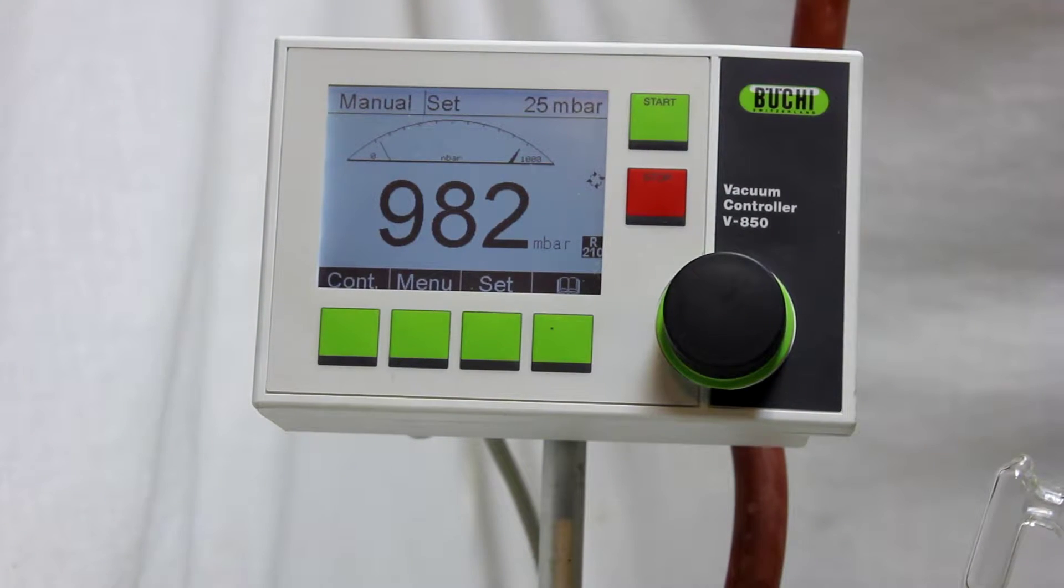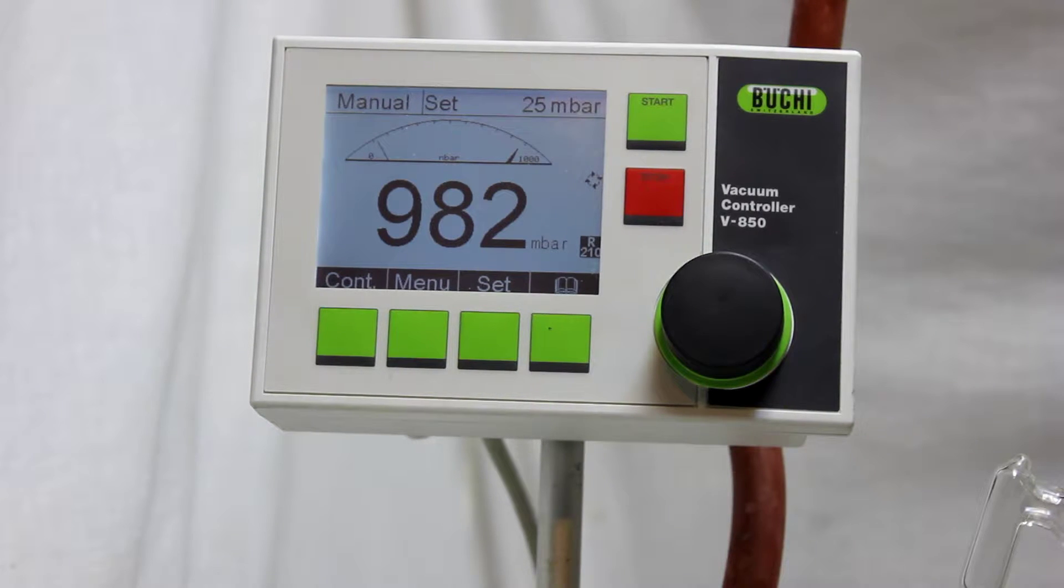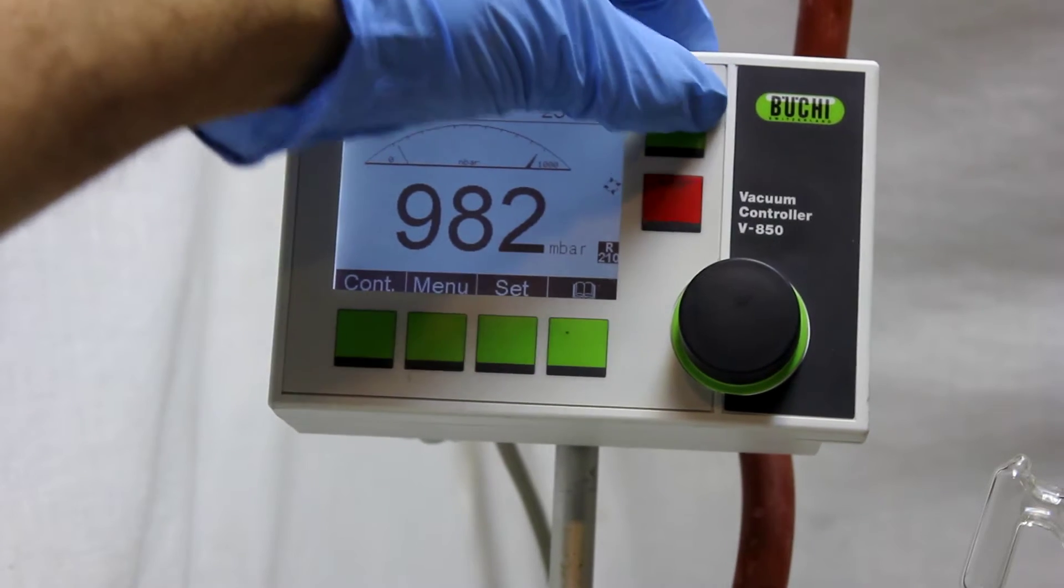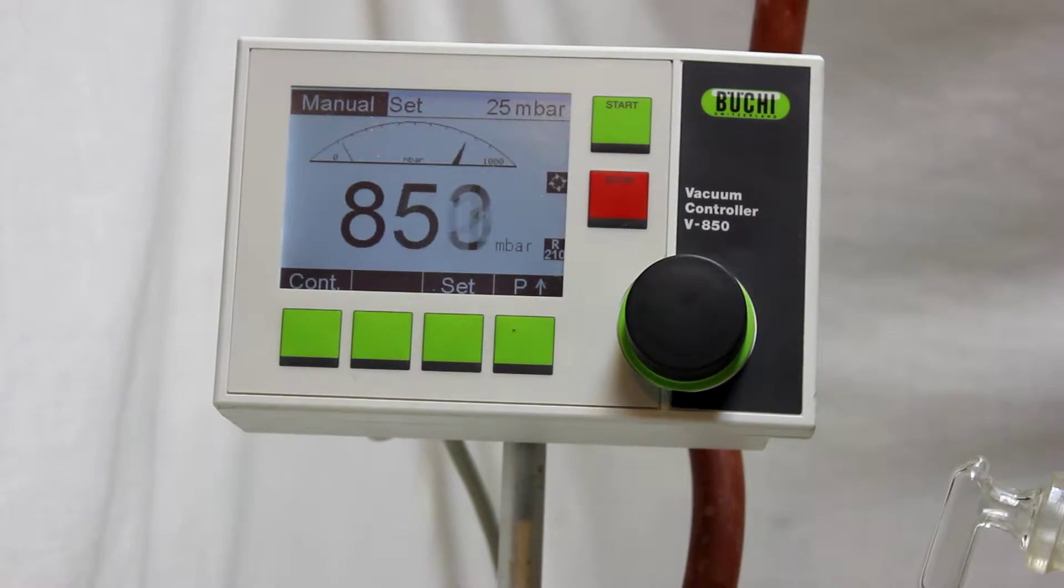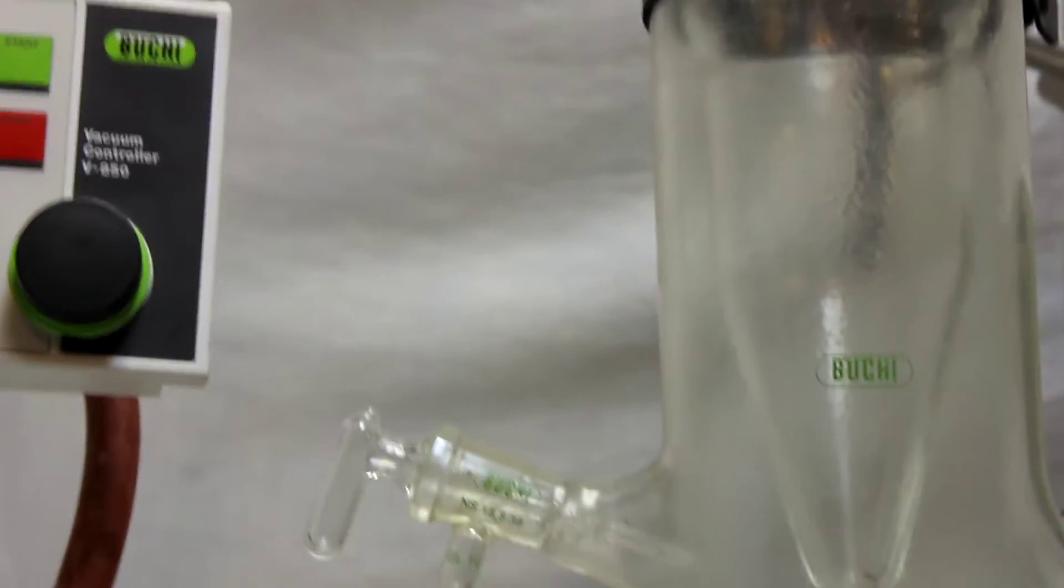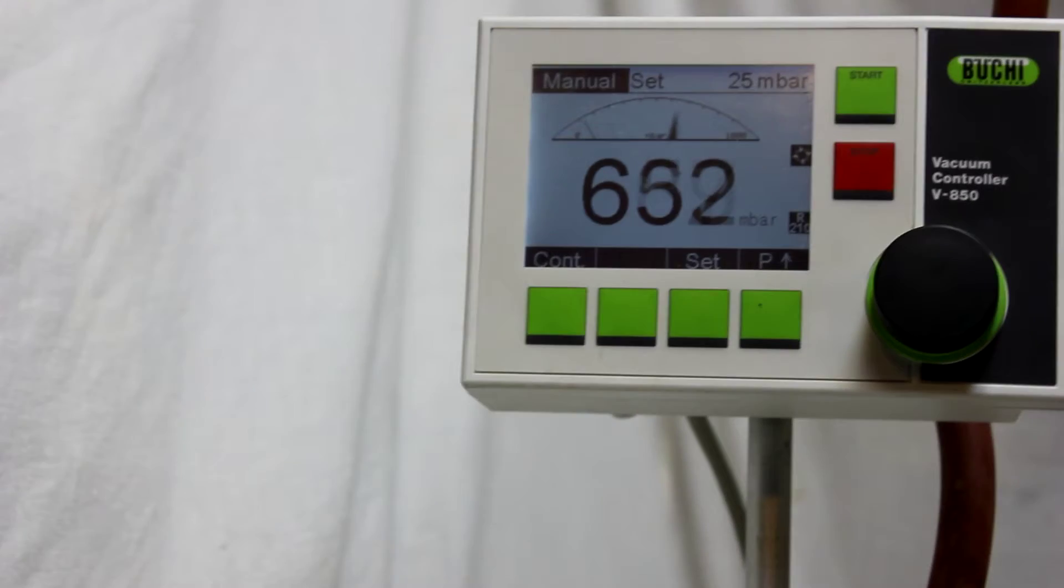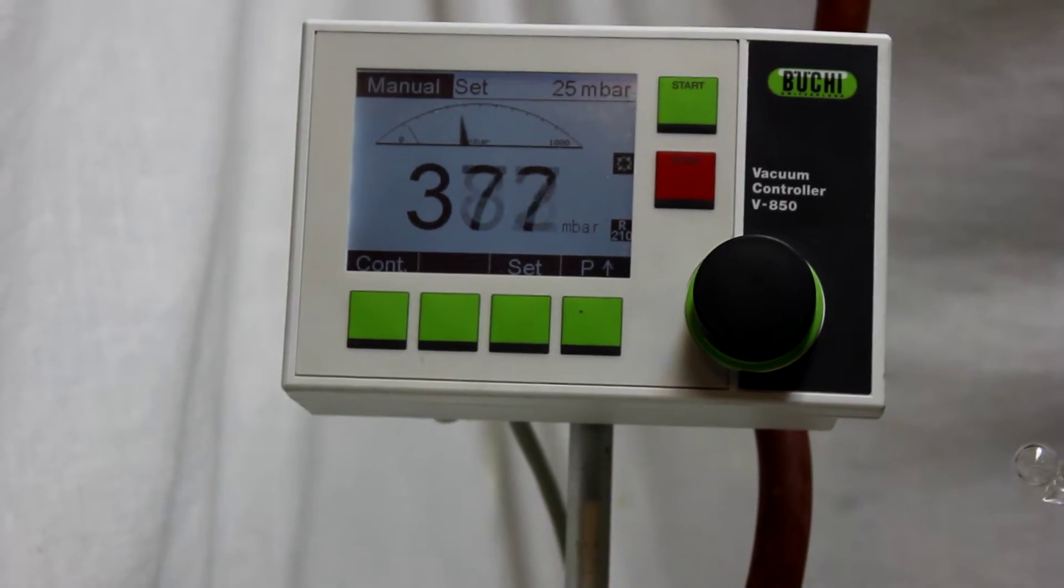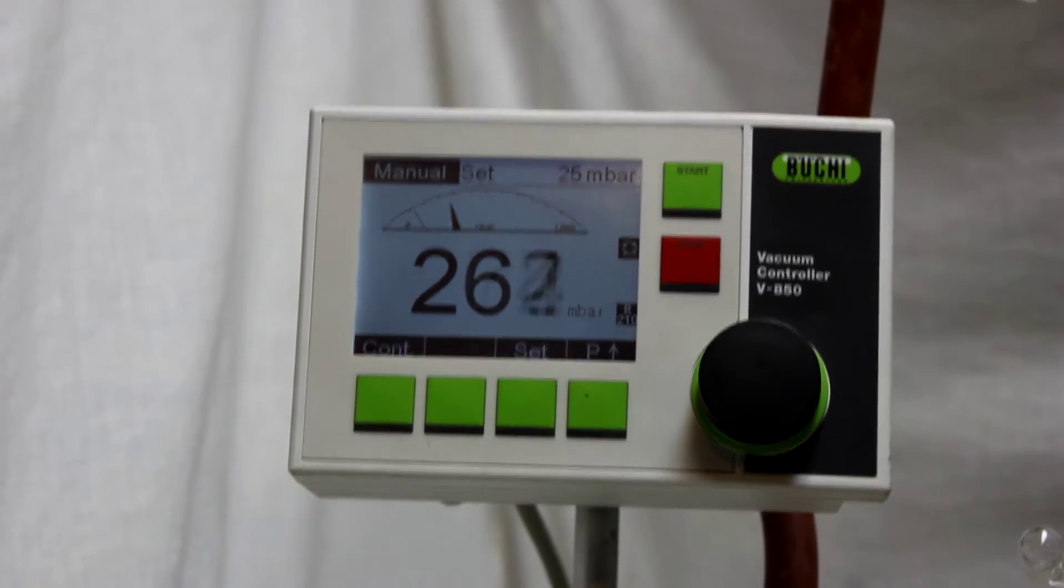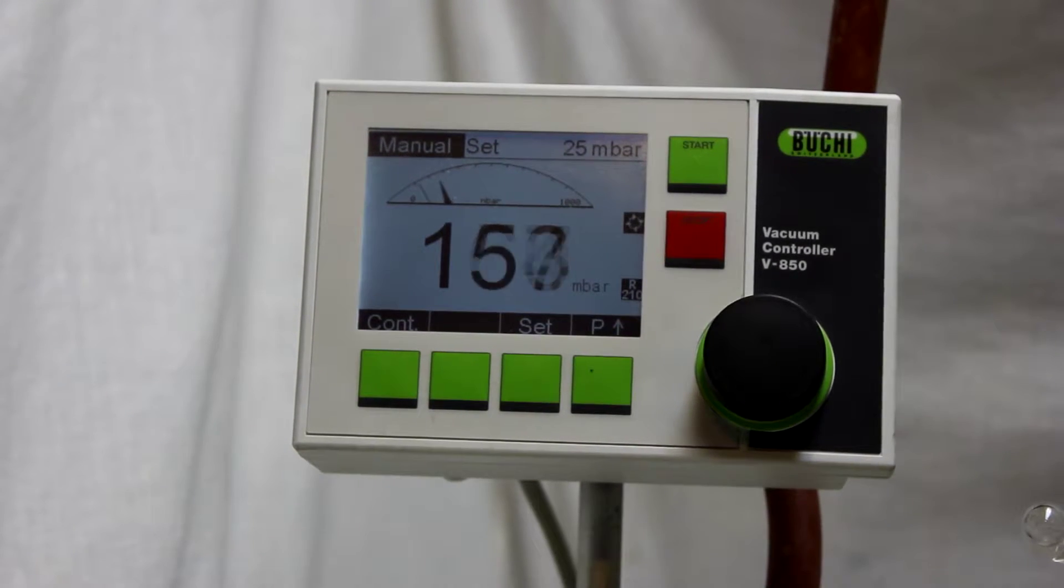So let's set it up with 24 millibar preset. I'm going to ask it to start, so start vacuuming. But the valve is open, so let's just close the valve and immediately you can see it's just gonna go under vacuum, and actually it goes very fast.